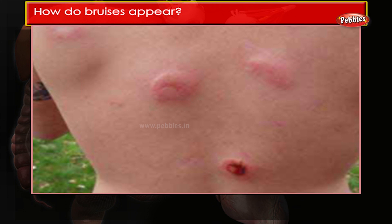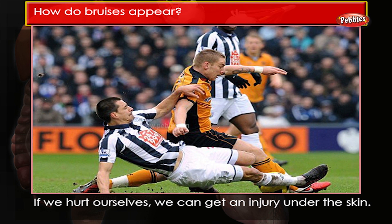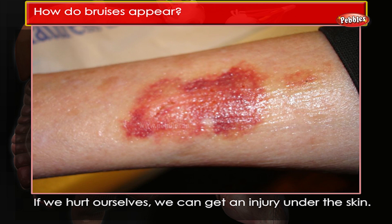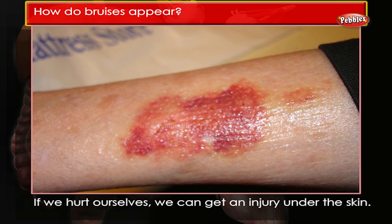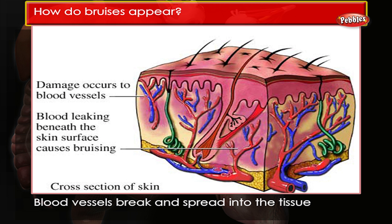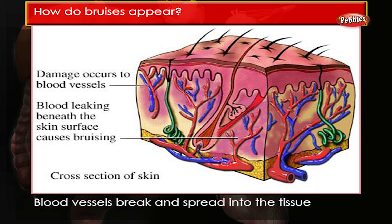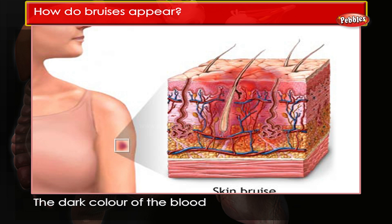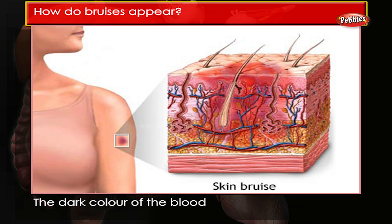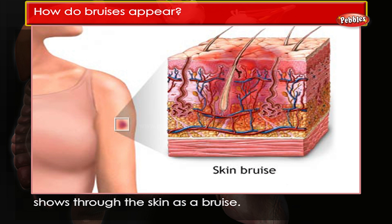How do bruises appear? If we hurt ourselves we can get an injury under the skin. Blood vessels break and spread into the tissue near the injury. The dark color of the blood shows through the skin as a bruise.